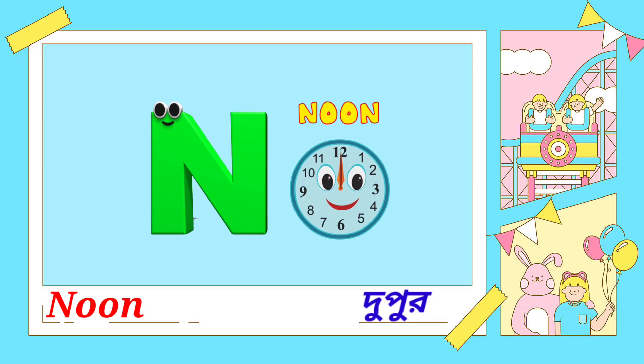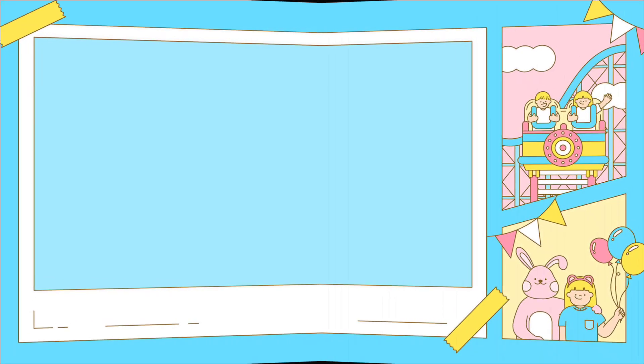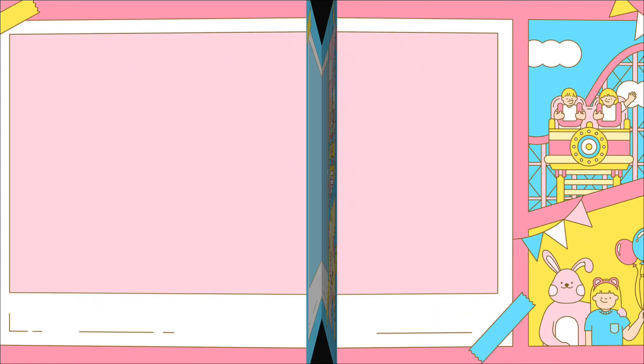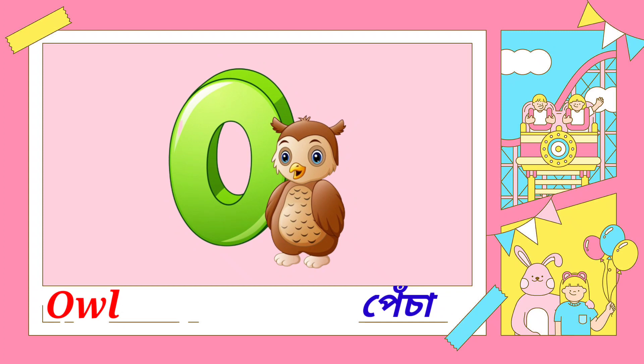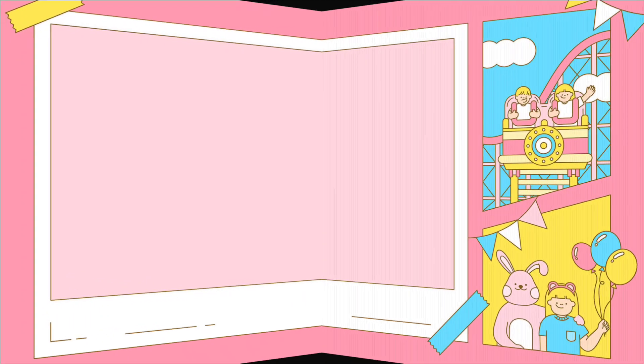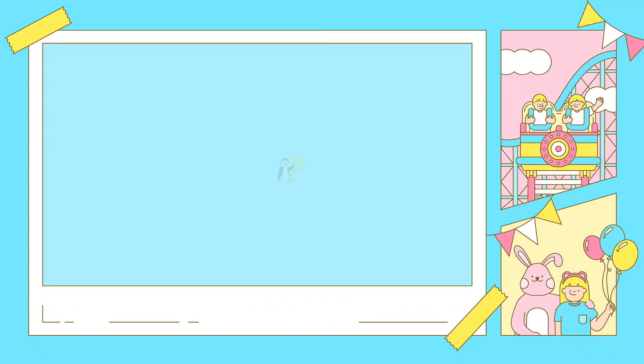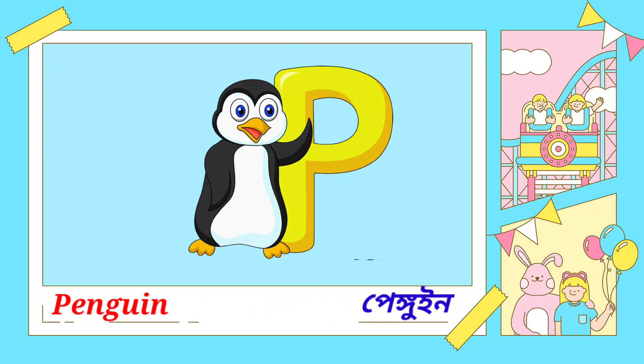N for moon — moon means dufur. O for owl — owl means peta. P for penguin.